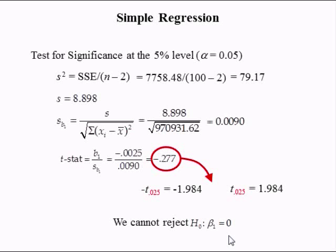Recall the discussion about omitted variable bias. Our theory suggests that the coefficient is actually negative, not equal to 0. In simple regression we have only one independent variable, so there is a huge potential for omitted variable bias because many things influence the employment population ratio of low-income single mothers. The fact that we cannot reject the null hypothesis suggests we have an omitted variable bias problem.